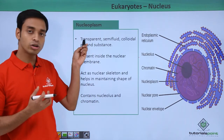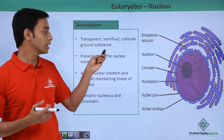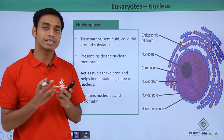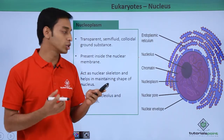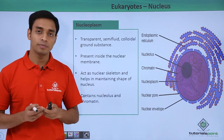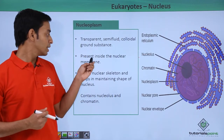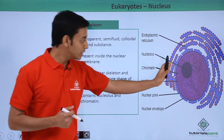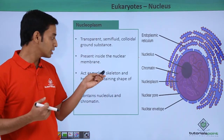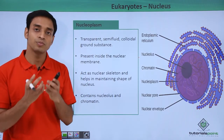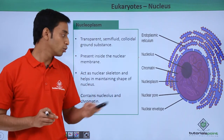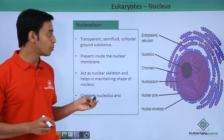The next structure is the nucleoplasm. Nucleoplasm is the transparent, semi-fluid colloidal ground substance — the pink-colored substance visible here. It is like the cytoplasm but present inside the nucleus. This colloidal matrix is present inside the nuclear membrane and acts as a nuclear skeleton, helping to maintain the shape of the nucleus.